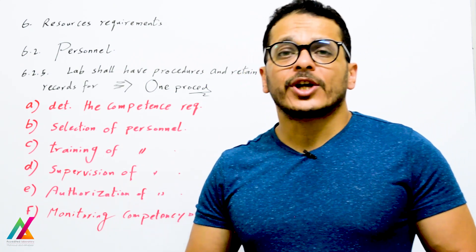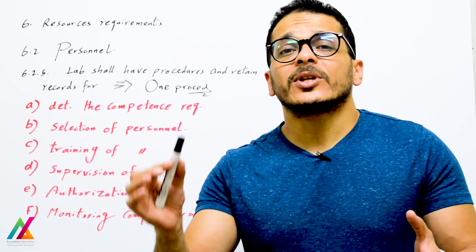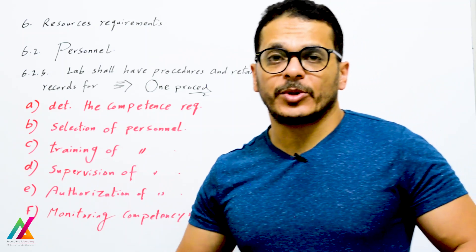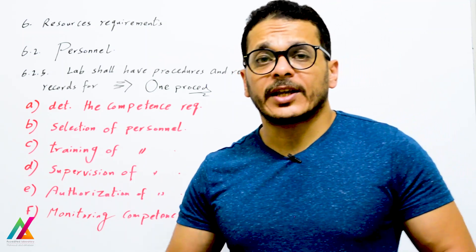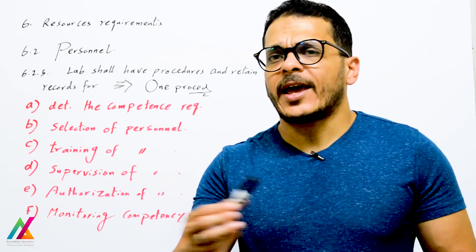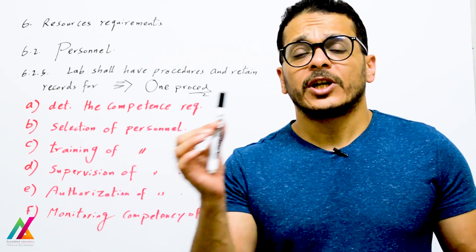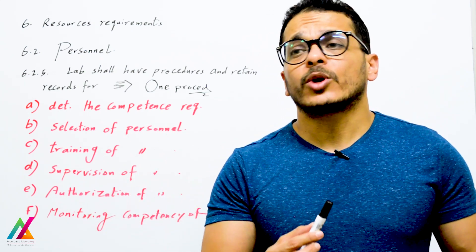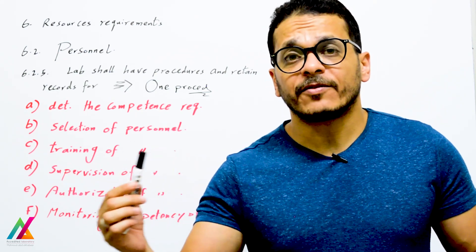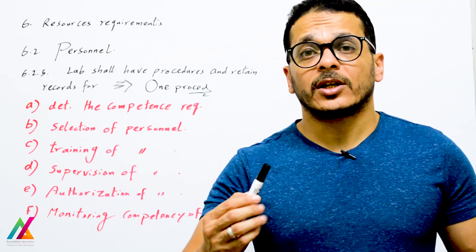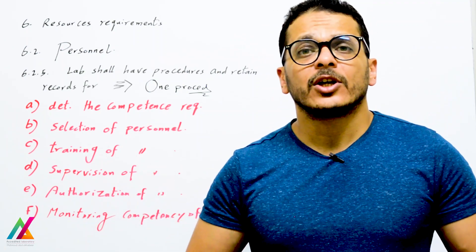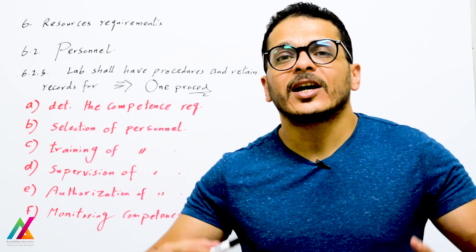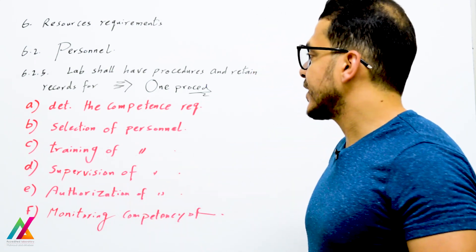There will be one procedure for determining competence requirements — defining what is required for each position inside the lab based on education, qualification, technical knowledge, skills, and experience. For example, if hiring a new technical manager, you might specify 15 years of experience, a PhD, ability to develop and validate methods, evaluate results, train staff on all methods and instruments, and specify which instruments are used. All of these requirements are defined in the procedure.